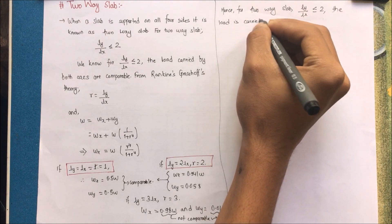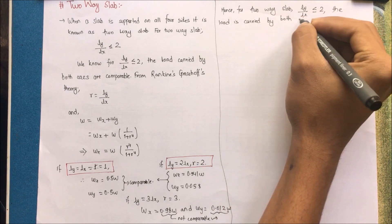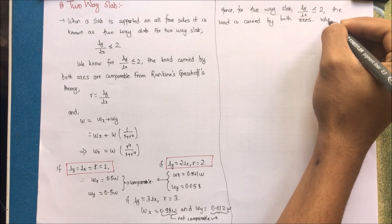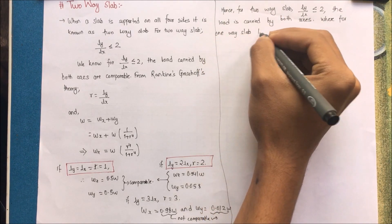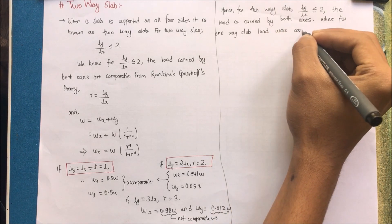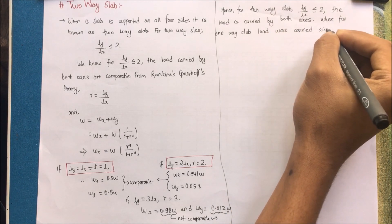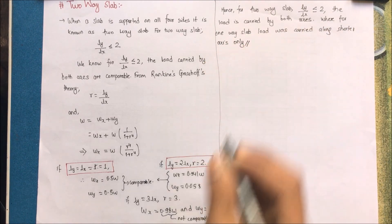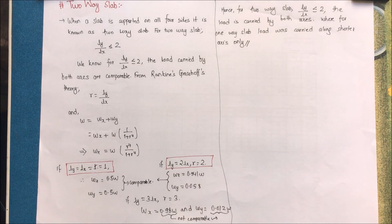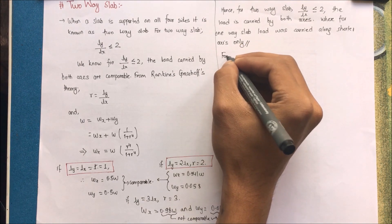For a one-way slab, the load was carried along the shorter axis only. When the value of r is 3, we find wx as 0.98w — about 98% of the load acts on the shorter axis when the longer side is approximately three times the shorter side. So for two-way slabs, ly/lx must be less than or equal to 2.